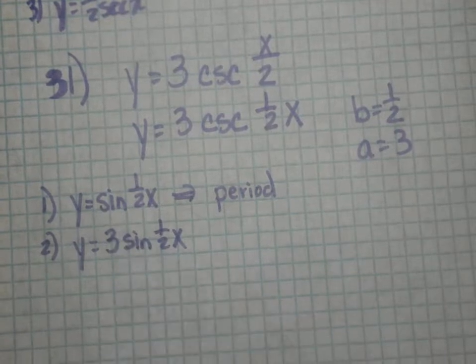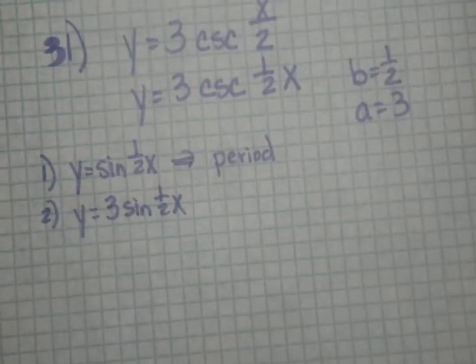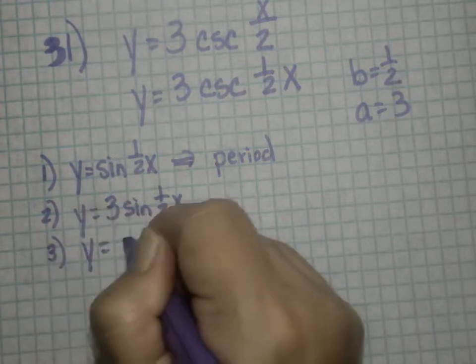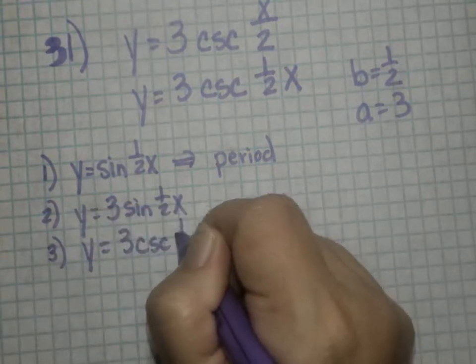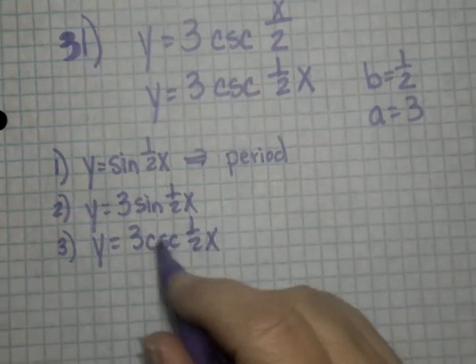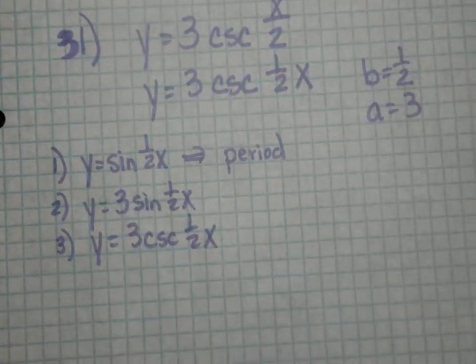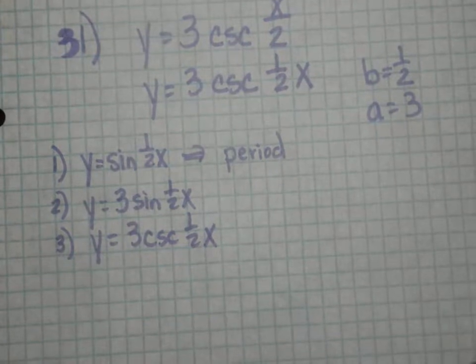You'll be changing your max and min, your amplitude. And then you can graph y equals 3 cosecant one half x. Because once you know where your sine is, then you can draw your little u shapes for your cosecant.